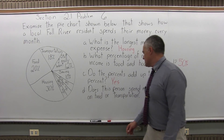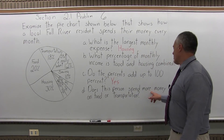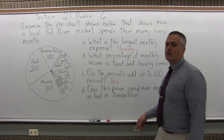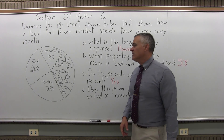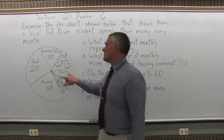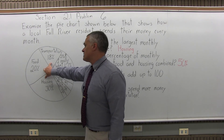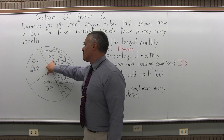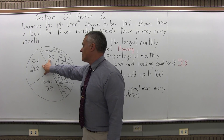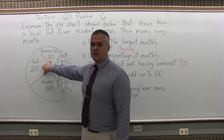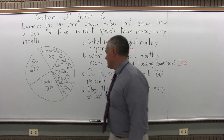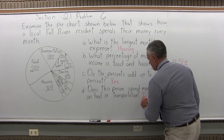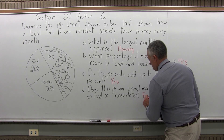Finally, Part D: does this person spend more money on food or transportation? Looking at the two wedges, by eye they look pretty close, but where the percents are included, they do spend a little bit more on food. So the answer to D is food.